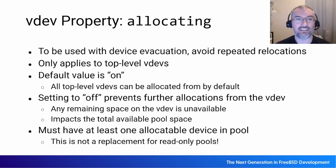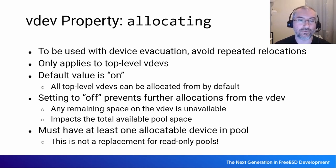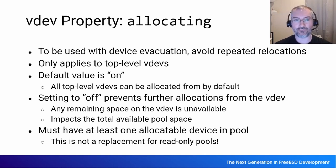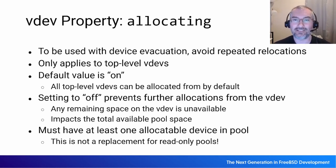Talking more about the allocating property: with device evacuation, you want to avoid moving the same data multiple times. You can set 'allocating=off' on two or three disks you're about to remove — ZFS will verify there's actually enough room for the removal to succeed, and the pool will shrink its reported free space to account for that. Then you remove them one at a time, knowing no new data will get written to the disks you plan to remove next, saving a lot of time and useless writes — especially in the cloud where you're paying for data transfer. ZFS will also make sure you always have at least one allocatable device in the pool.